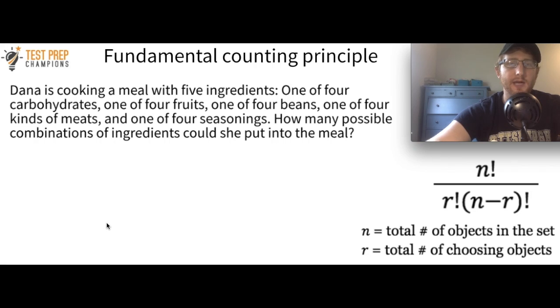So far, we've been looking at cases that involve only one kind of ingredient. So let me show you what to do when you've got multiple kinds of ingredients. So in this case here, what we're going to use is called the fundamental counting principle. And the example says, Dana is cooking a meal with five ingredients, one of four carbohydrates, one of four fruits, one of four beans, one of four kinds of meats, and one of four seasonings. How many possible combinations of ingredients could she put into the meal? So let me give you a chance to try this out. This is different. In my opinion, this is actually a little bit easier once you see how to do it.